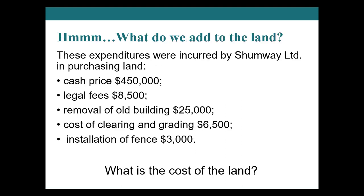Let's look at a land cost example. The cost of the land should be $490,000, which equals the cash price of $450,000, plus legal fees of $8,500, plus the cost to remove the building on the property, plus the cost of clearing and grading to get the land ready for use. It does not include the installation of the fence — that goes to land improvements, gets its own line in the PP&E notes, and will be depreciated over the useful life of the fence.